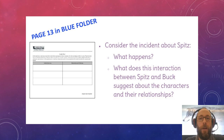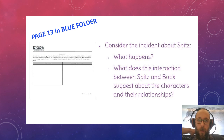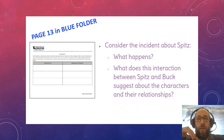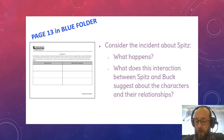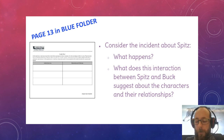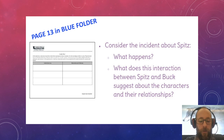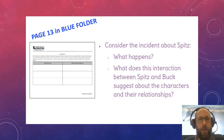Now we're going to turn to page 13 in our blue folder and analyze an incident. On the left-hand side of the chart it says 'Incident Summary' and on the right-hand side it says 'Observations and Inferences.' An incident means a thing that happened — an event. Observations and inferences is what you observe and think about: what does this really mean, what's the deeper significance? We're going to look at events and think about what we can learn about the characters. We're still in the exposition — still introducing characters and setting.